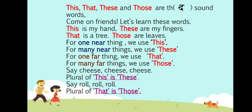And as fingers are many, we use the word 'these' for referring many things which are near to us. The next line is: that is a tree, those are leaves. Here we are talking about the tree which is one but is far from us, so the word 'that' is used to refer one thing which is far from us. And we are talking about leaves, which are many in number but are far from us, so the word 'those' is used to refer many things which are far from us.